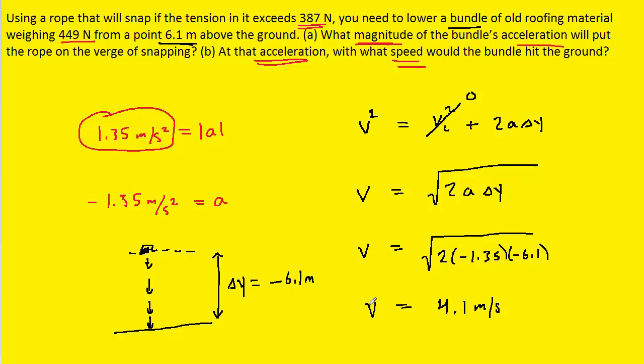Now technically because this is a velocity and the bundle is moving downward, it actually will be negative 4.1 meters per second. But the question is asking for speed, and speed doesn't have a direction to it.